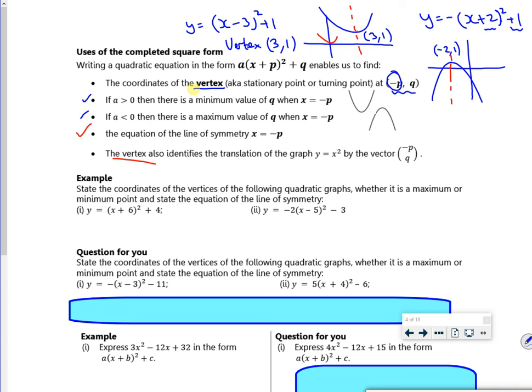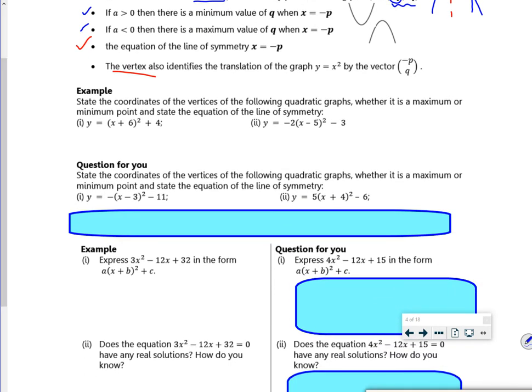So let's keep on going. It says state the coordinates of the vertices for the following quadratic graphs. So the vertex here is change the sign, stays the same. The vertex here, change the sign, stays the same. So that's the vertex here.